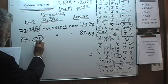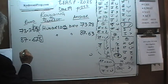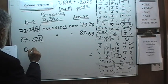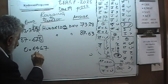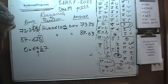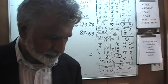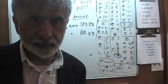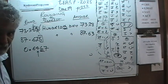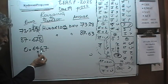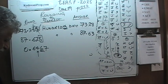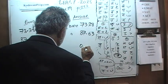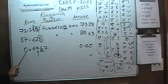Let's do one more — hundredths digit again. The number is 0.6467. Here is the hundredths digit — the 4. What comes after it is 6, and 6 is equal to or more than 5. So we round up: 0.6467, when rounded to the nearest hundredth, becomes 0.65.